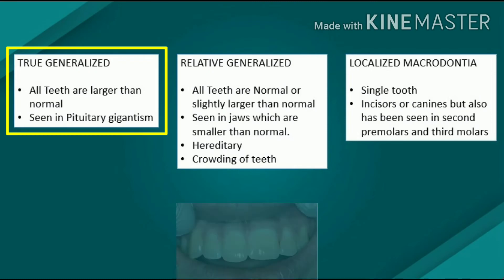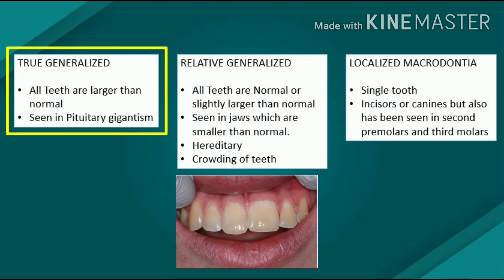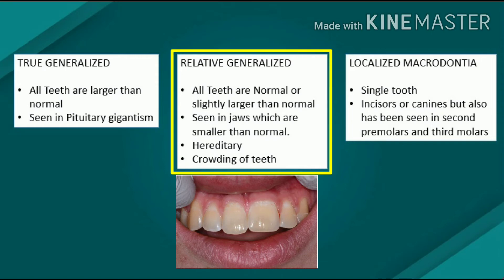True generalized macrodontia, the condition in which all teeth are larger than normal, has been associated with pituitary gigantism. Relative generalized macrodontia is somewhat more common and is a result of the presence of normal or slightly larger than normal teeth in small jaws.